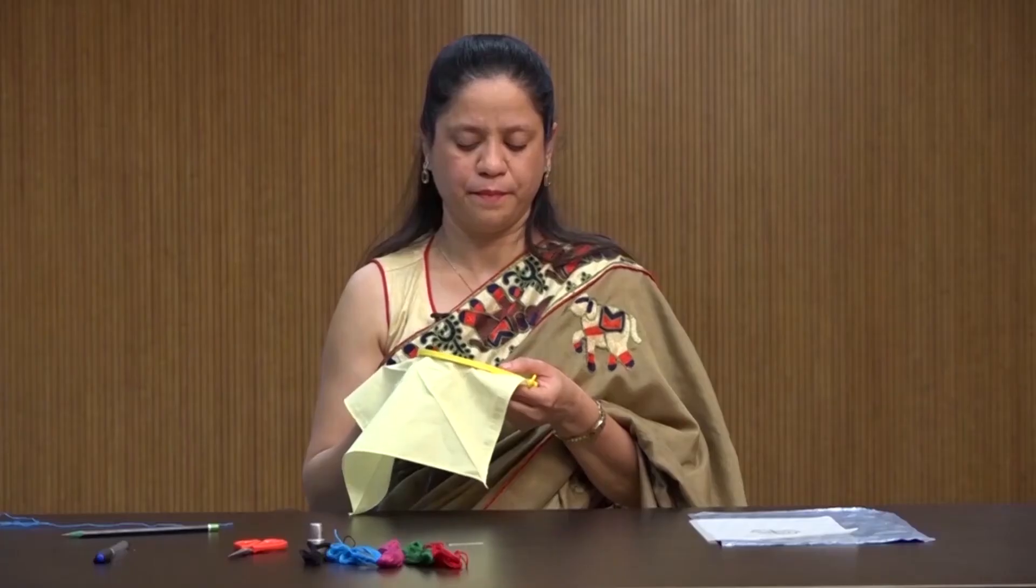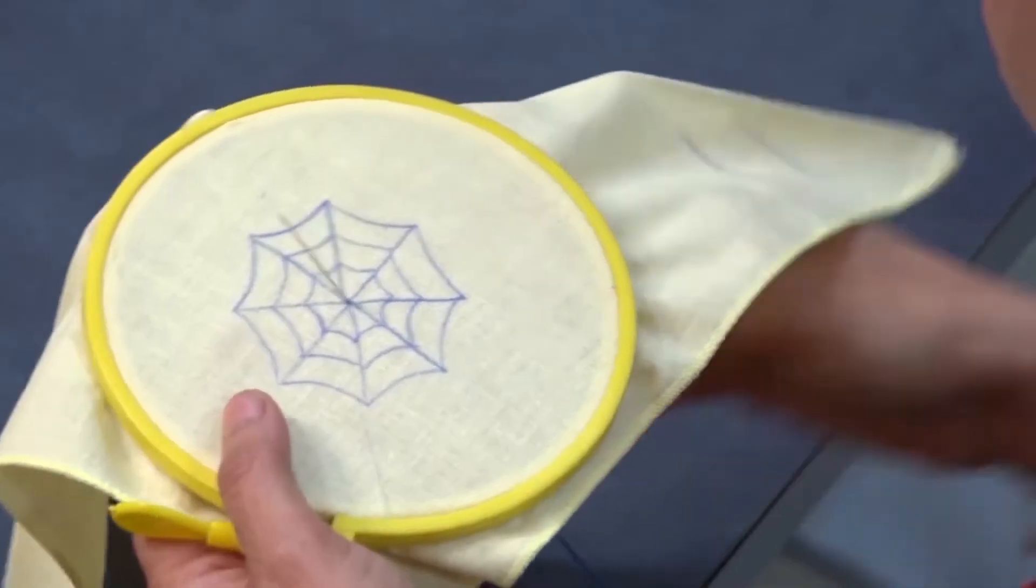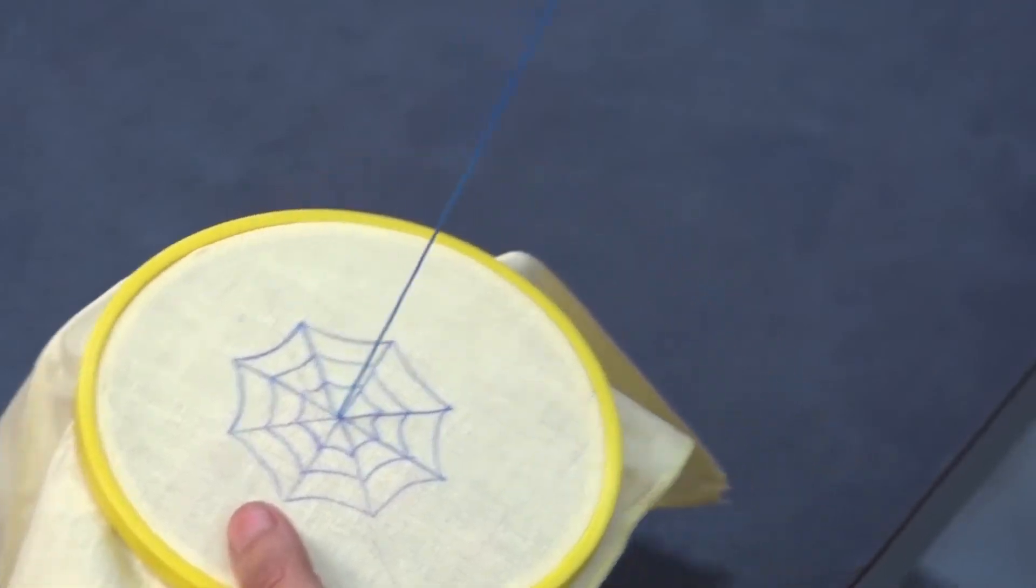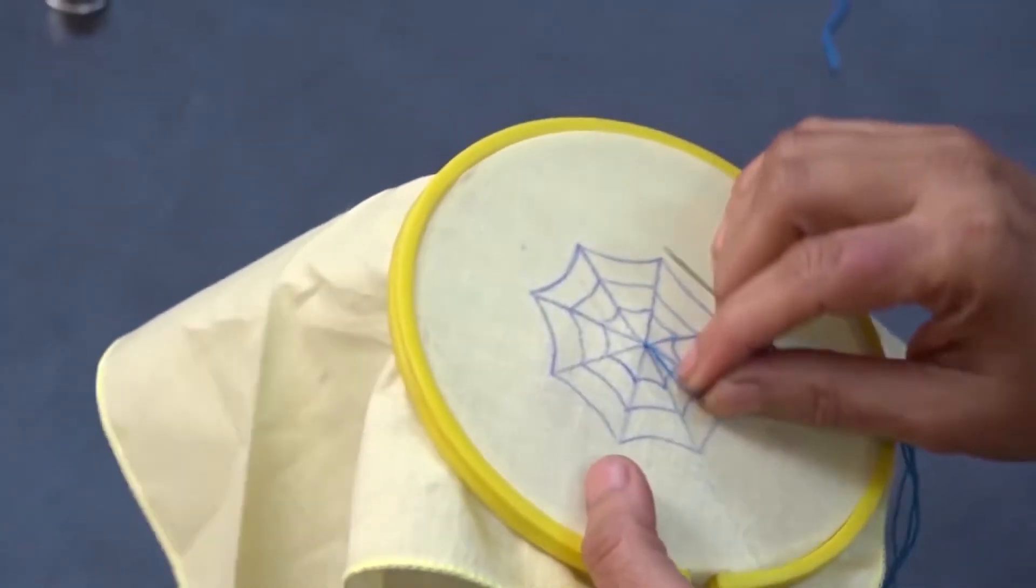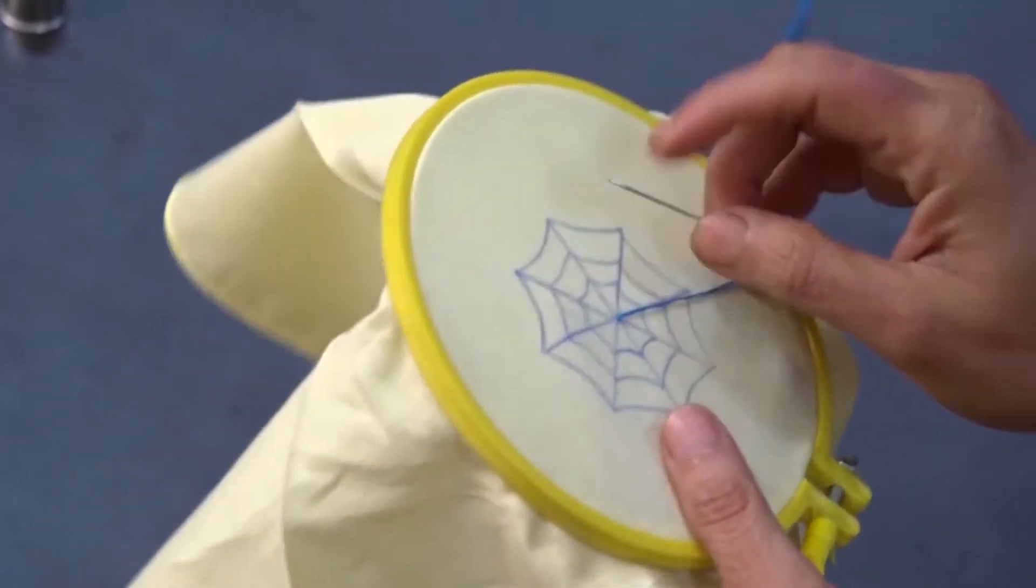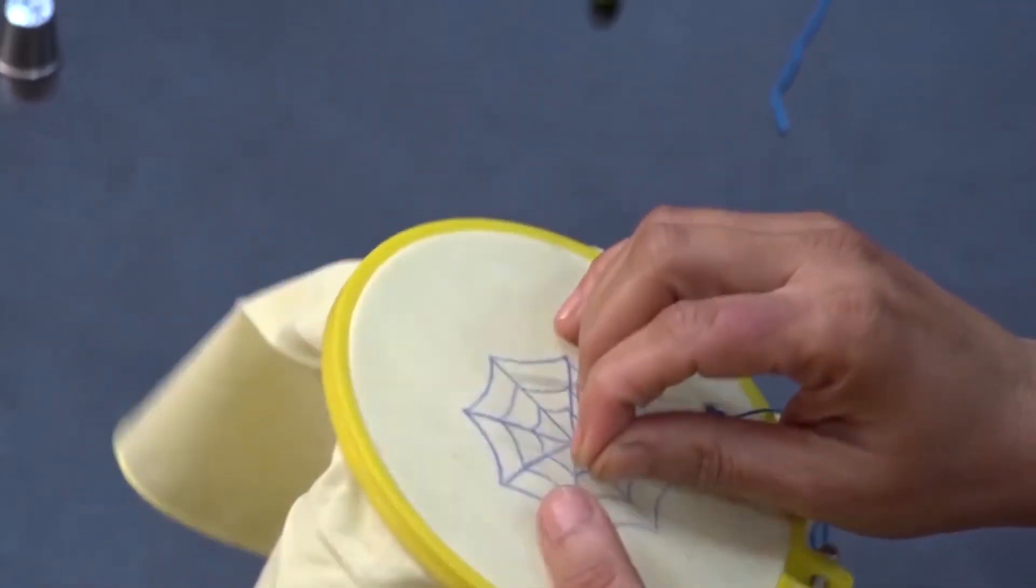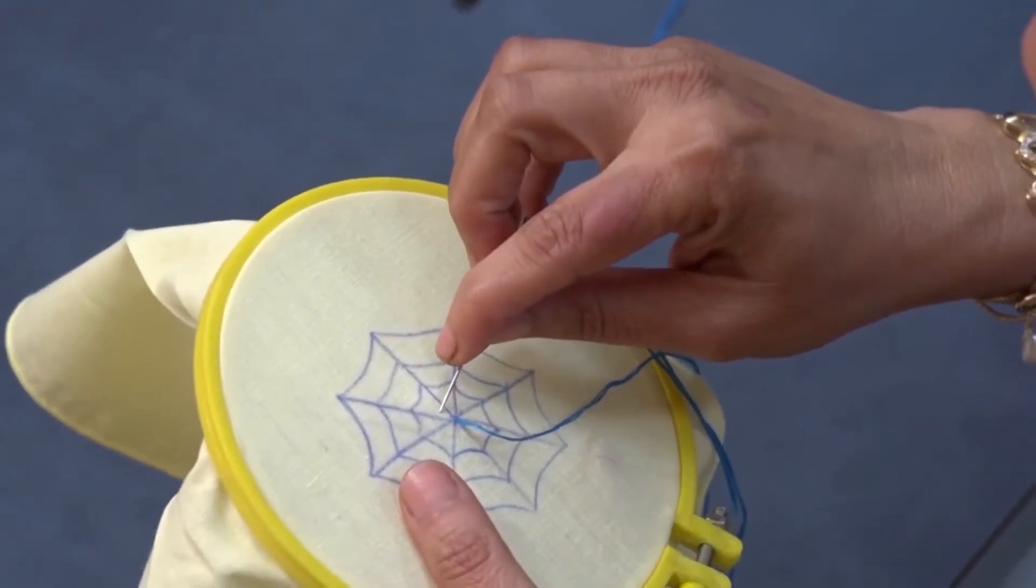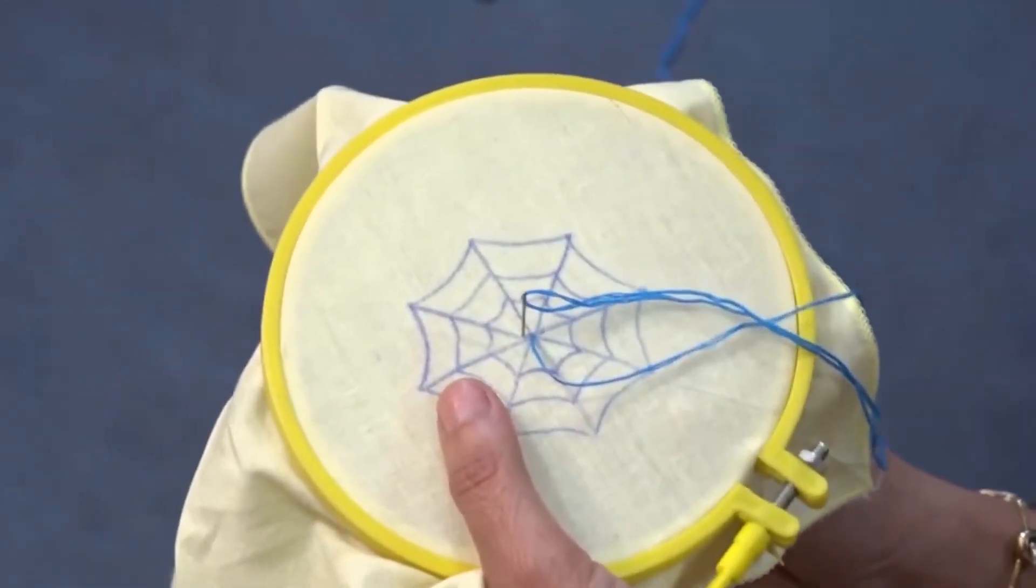Bring the needle up to the front side of the fabric. Insert the needle from above to downward at the other end of the design.